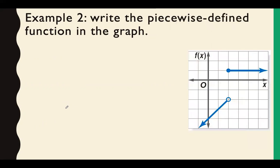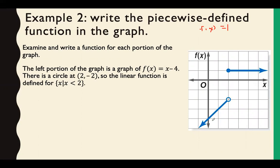Example 2, write the piecewise defined function in the graph. So as a reminder, when we have a flat line, this is going to be a y equals or an f of x equals equation. So I know this part here is at 1. And then we need to come up with the equation here. So we would take a look at each of them separately and just define the part. So the left portion is going to be x minus 4.